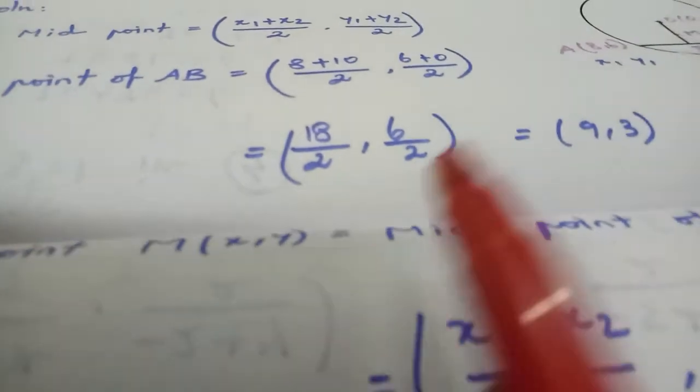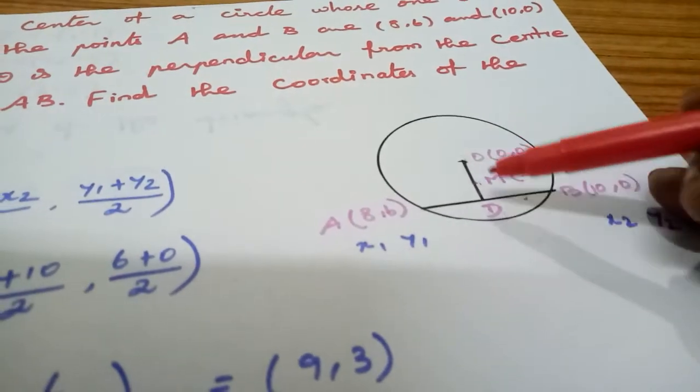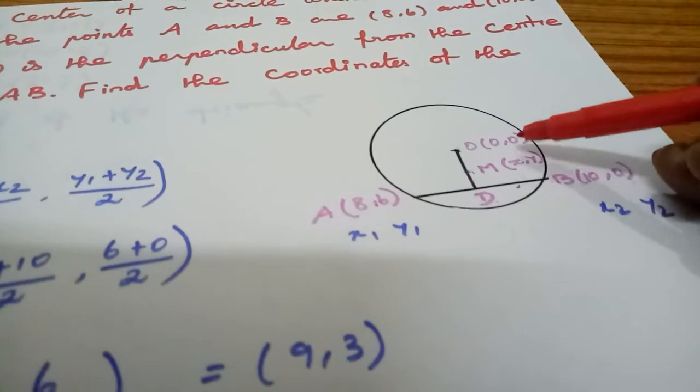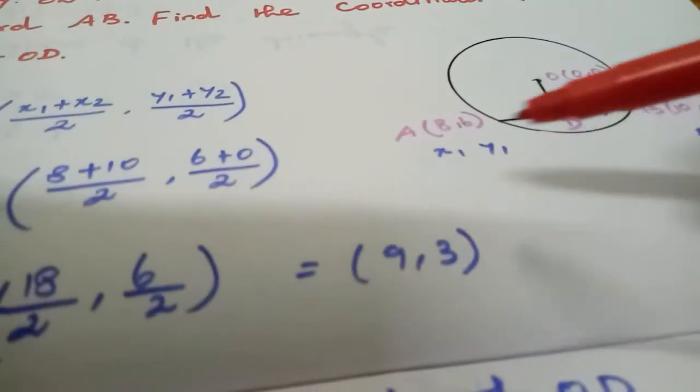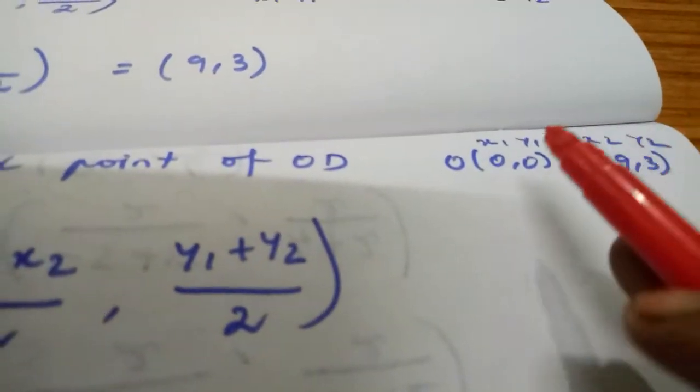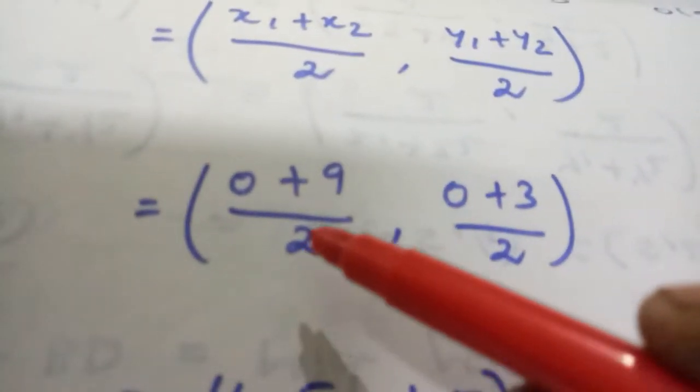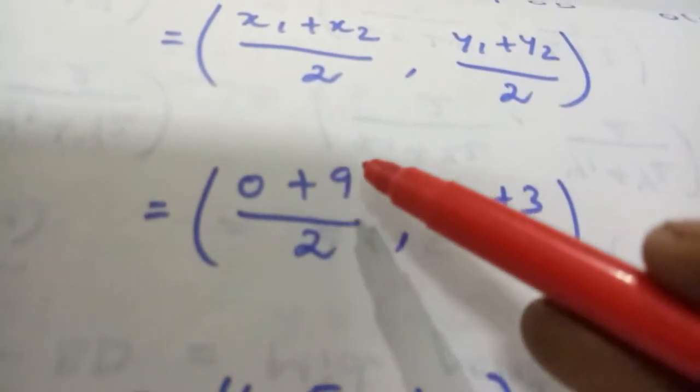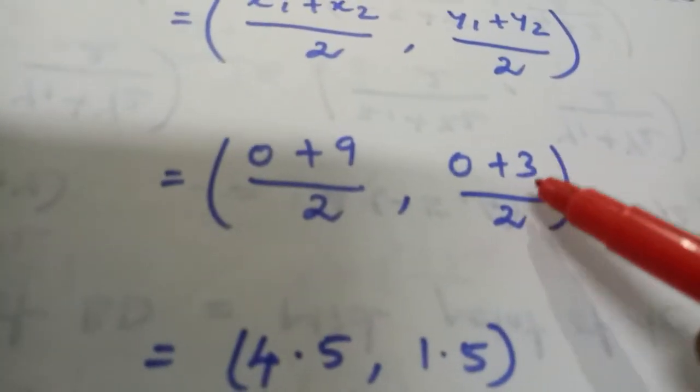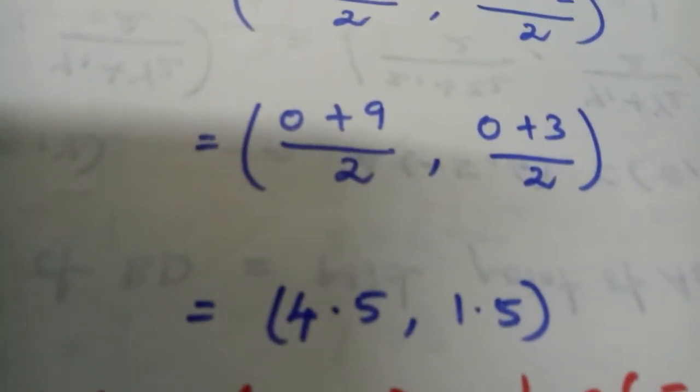So the midpoint D is at (9,3). Now to find the midpoint M of OD, using O(0,0) and D(9,3): (0+9)/2, (0+3)/2 equals 9/2, 3/2. That's 4.5, 1.5. So the answer is the midpoint at (4.5, 1.5).